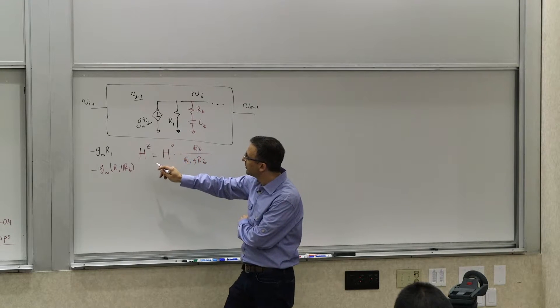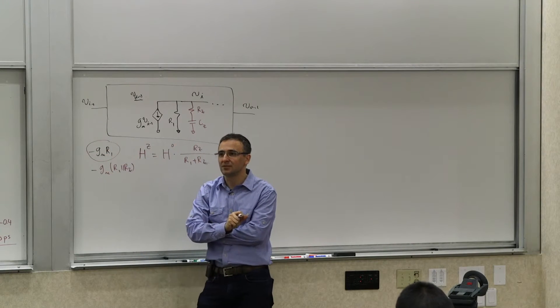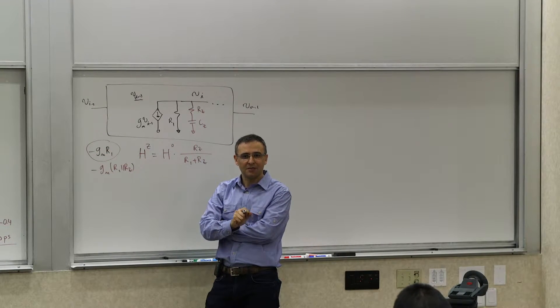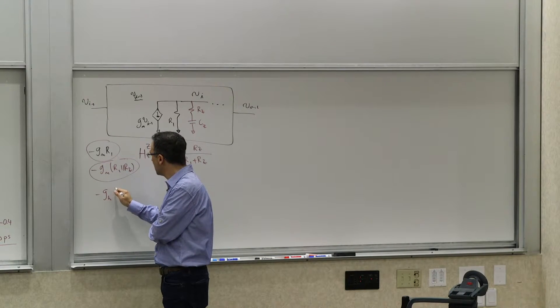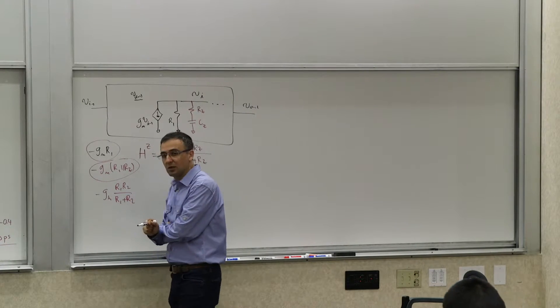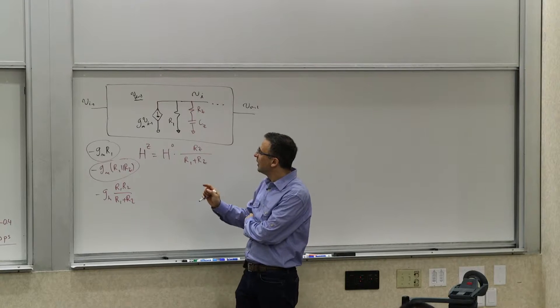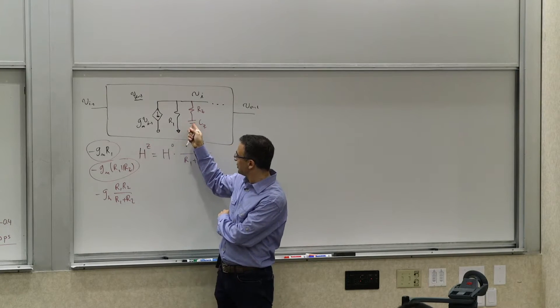Because Hz, H0 had this term in it, right? Now that term got modified to this term, which is again negative GM R1*R2 over R1 plus R2.